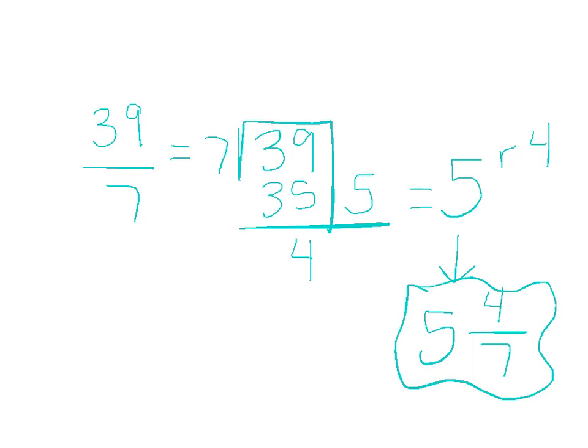And you could do models too. Just cutting them up into 7ths and coloring them in. You'd end up having 5 whole numbers, or whole models colored in and then 1 with 4 colored in. So you'd have 1 box that has 7 and only 4 there.